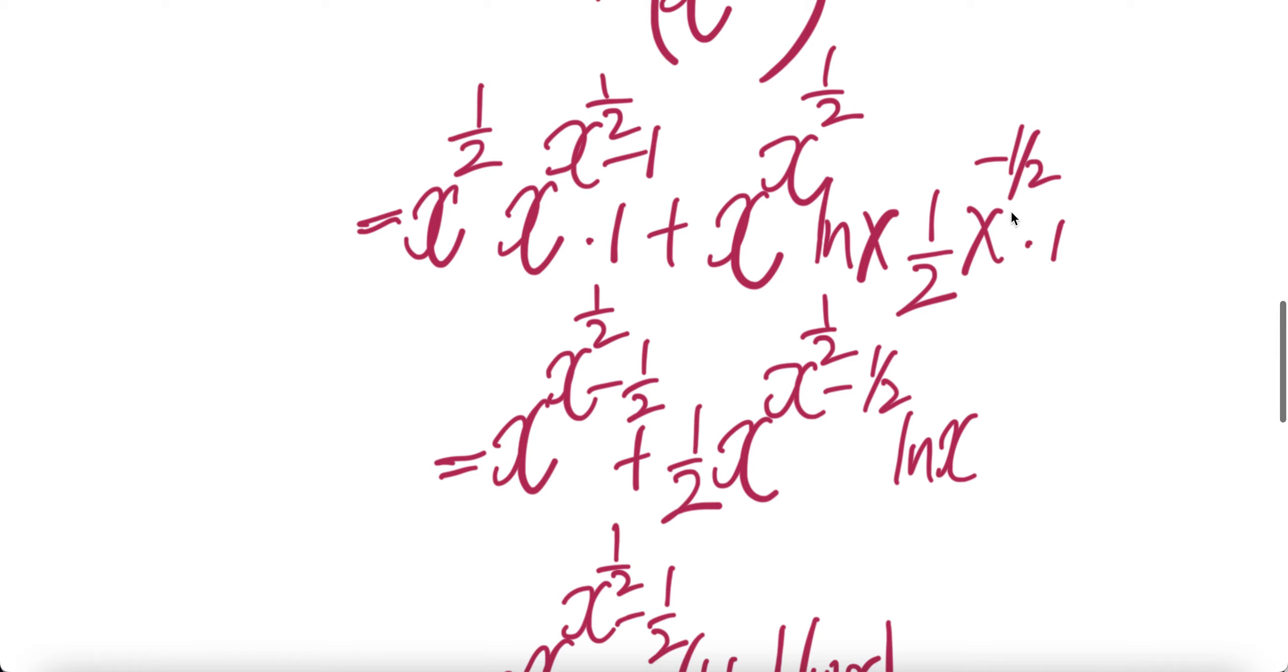And then let's combine these two. We get x to power half minus half, and then we have half here, and then ln x.